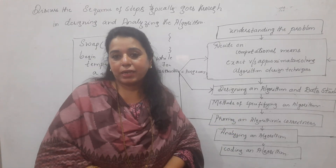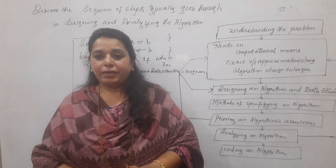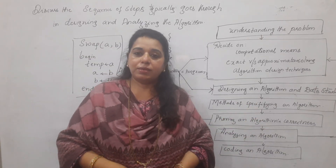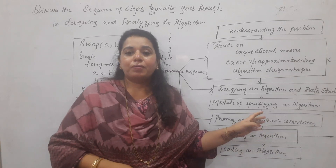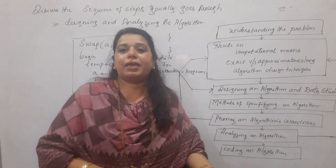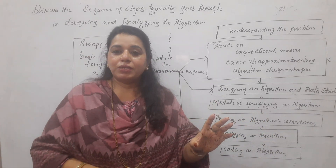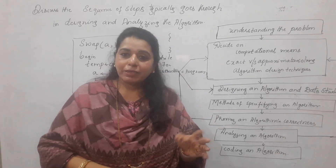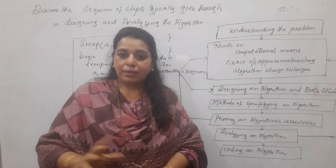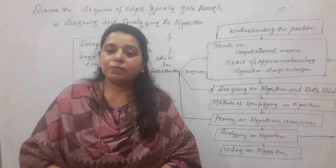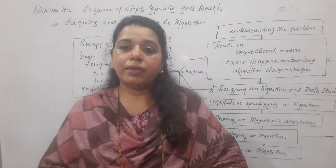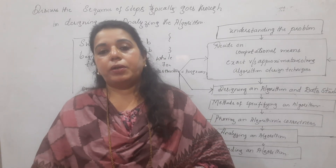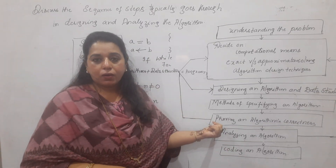The next step is proving an algorithm's correctness. You have to check all possible instances of the problem. An analogy: a stopped clock may show the correct time twice a day, but that does not mean it is working. Similarly, a solution is only correct if it produces the right result for all instances of the problem.